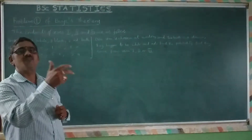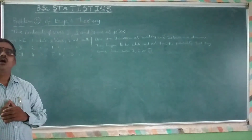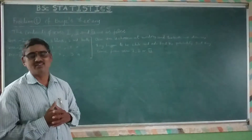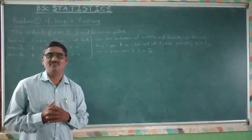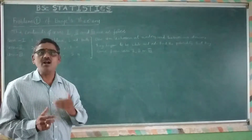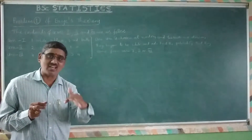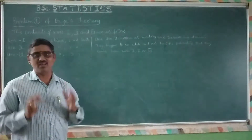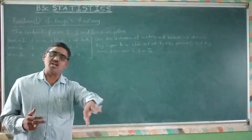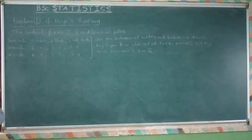If you look at it, you can easily identify that it is a problem of Bayes' theorem. Why? Because you have to select the urn randomly as well as select the balls randomly, and such kind of probability is going to be calculated with the help of Bayes' theorem.